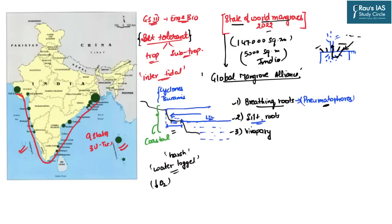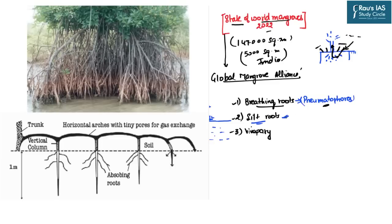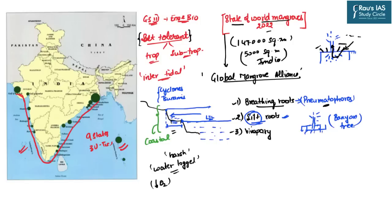Silt roots are roots that diverge from the stem and branches and penetrate the soil some distance away from the main stem — similar in structure to the banyan tree. Because of their appearance and the physical support they provide, they are called silt roots. These mangrove plants are continuously exposed to fast-moving ocean and sea waters, so silt roots make them physically strong enough to withstand the hydraulic pressure.